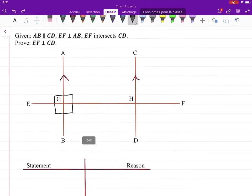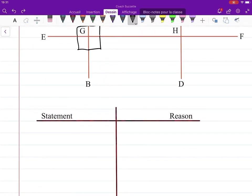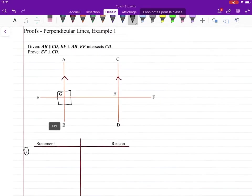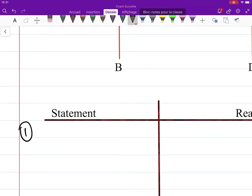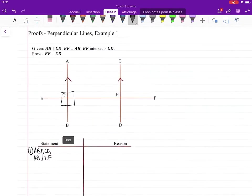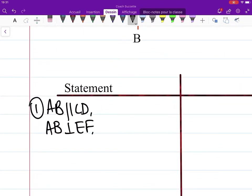So let's first start off by writing down what we were given. We know AB is parallel to CD. We know that AB is perpendicular to EF, and that EF intersects CD.